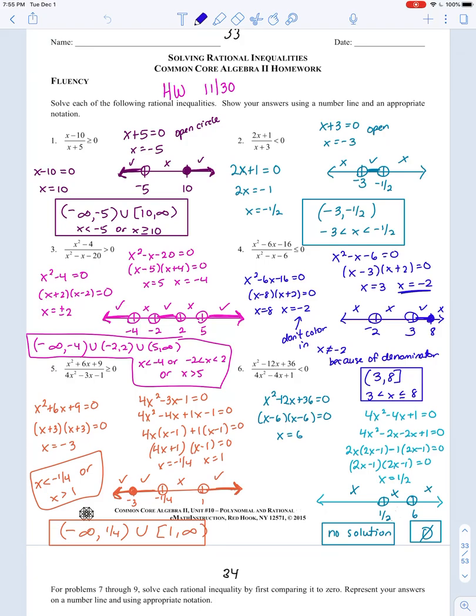So this was the homework from the other day. You can just check your answers. The first one was very similar to what we did in class. I think it's pretty self-explanatory. Don't forget that whatever makes the denominator zero is always an open circle. And then the other one depends on the original inequality.